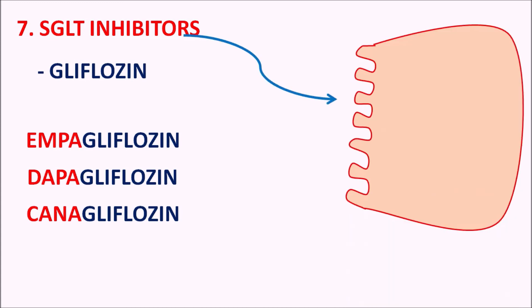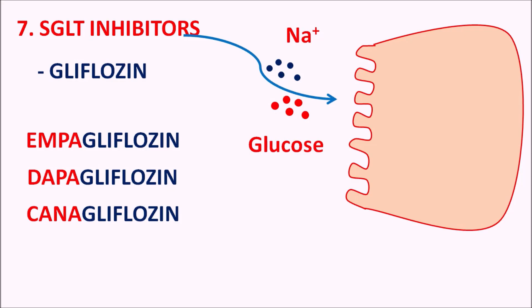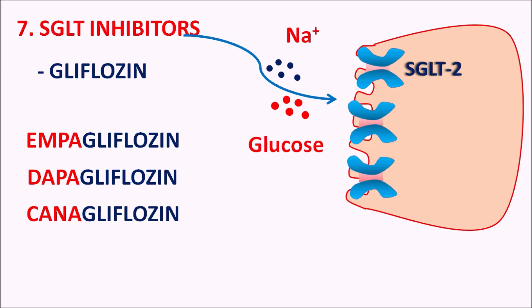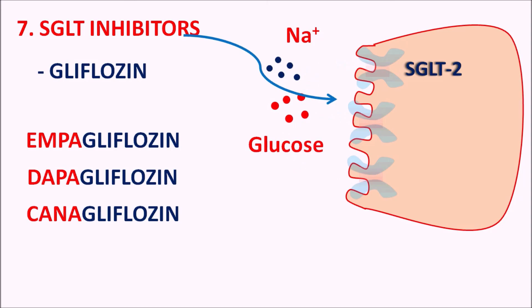Seventh are the SGLT inhibitors — sodium-glucose transport inhibitors — with the suffix GLIFLOZIN. Drugs include empagliflozin, dapagliflozin, and canagliflozin. These drugs affect glucose absorption at the renal tubules: normally, glucose and sodium are reabsorbed into the systemic circulation from the apical membrane of renal tubules via SGLT transporters. These drugs inhibit the SGLT-2 transporter, so sodium and glucose are not reabsorbed and are instead excreted in the urine, reducing glucose reabsorption into the systemic circulation.